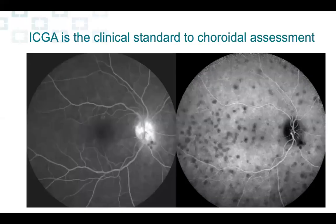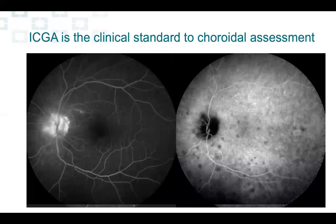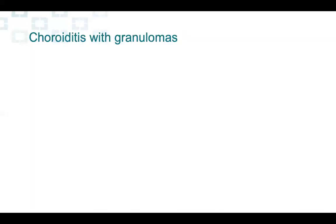In the intermediate phase, they change in number — they're fewer — but they're more visible, and they persist during the late phases of the ICG. In the left eye, we have the same appearance with small hypofluorescent lesions along the inferior arcades. When we deal with this particular kind of ICG appearance, the diagnosis is choroidal granulomas.